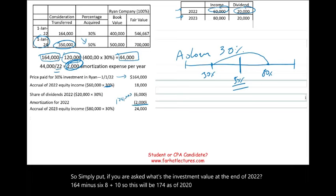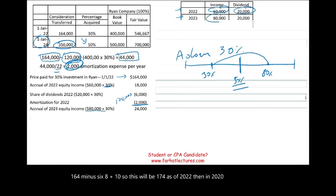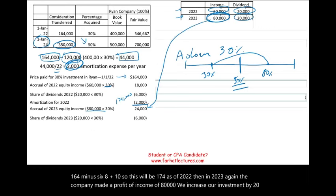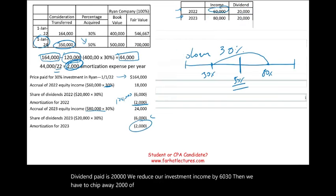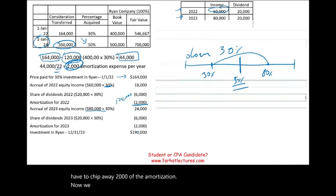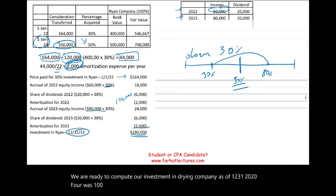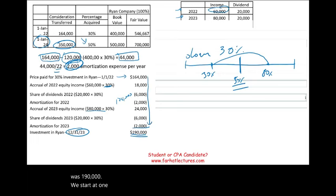In 2023, the company made income of $80,000 — we increase our investment by $24,000 (30%). Dividends paid were $20,000, so we reduce our investment by $6,000 (30%). Then we chip away $2,000 of amortization. We are now ready to compute our investment in Ryan's company. As of December 31st, 2023, the investment balance was $190,000. We started at $164,000 and went all the way up to $190,000.